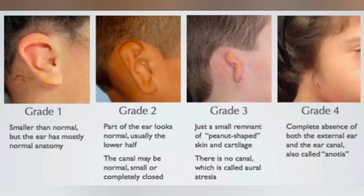Canal atresia can be divided into Grade 1, Grade 2, Grade 3, and Grade 4. Grade 1: smaller than normal but the ear has mostly normal anatomy. Grade 2: part of the ear looks normal, usually the lower half, and the canal may be normal, small, or completely closed. Grade 3: just a small remnant of peanut-shaped skin and cartilage; there is no canal, which is called aural atresia.